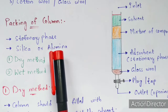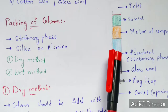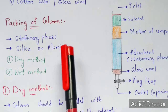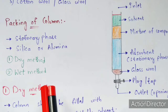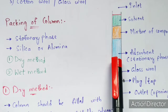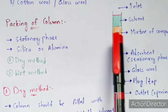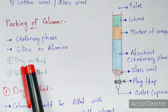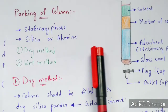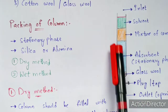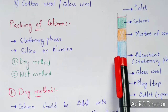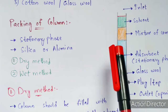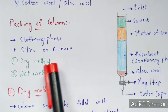The packing of the column involves not only the stationary phase but also the mobile phase. When you add silica or aluminium into the tube, you immediately add solvent as well. The stationary phase then gets dissolved into the mobile phase. This process occurs by two methods: the dry method and the wet method.